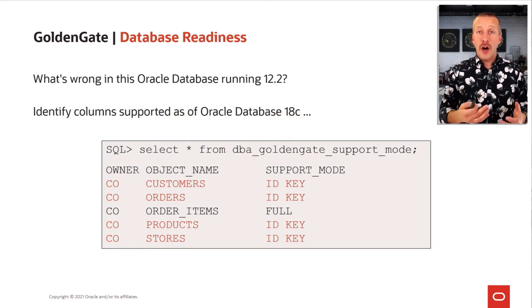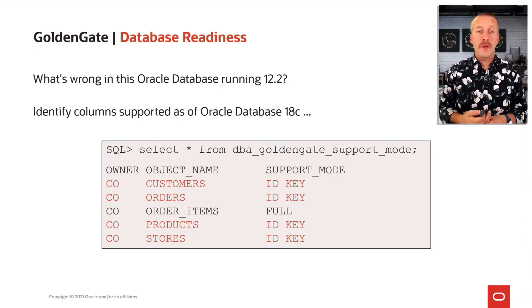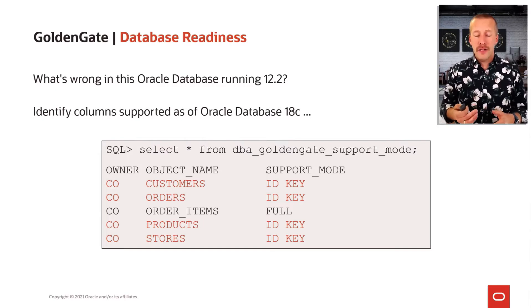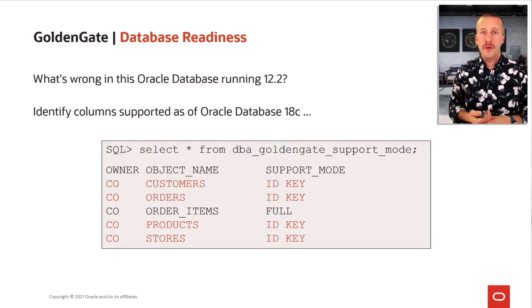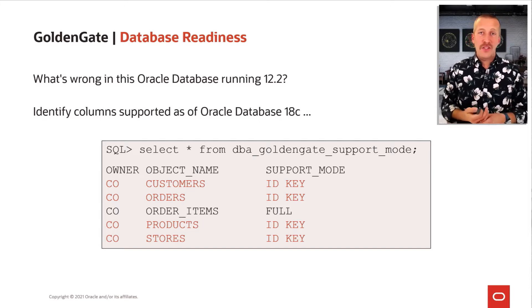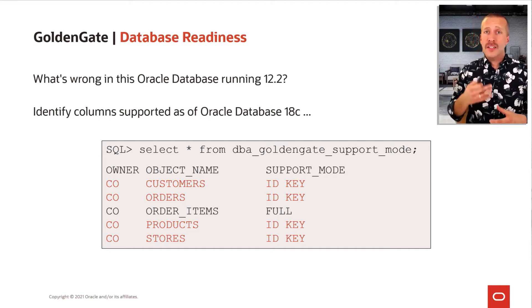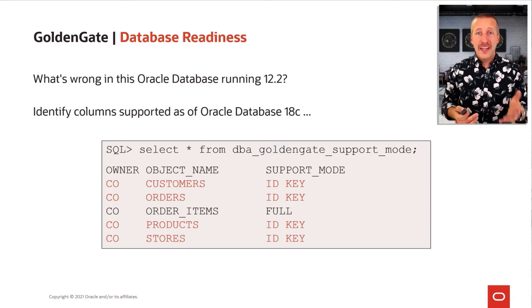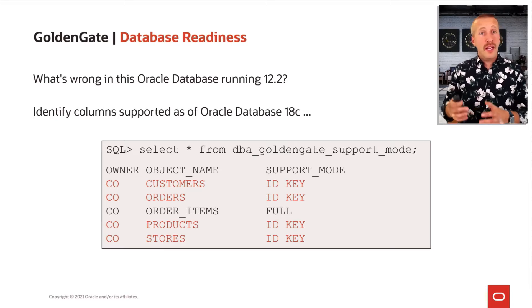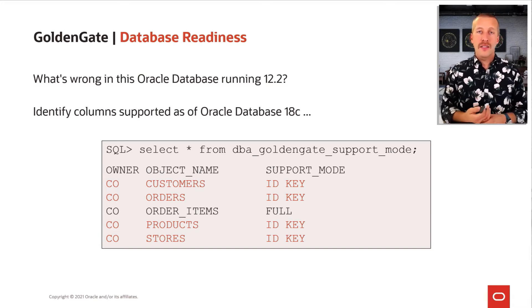So what were the problems with the objects in this database? It is a 12.2 database, and we can see that four of the objects have Support Mode set to IDKey. How can you find out what the actual problem is? There is no easy answer in 12.2 — you would need to look in the documentation, find the restrictions and limitations of Golden Gate, and compare that with the object itself. In this case, the problem was identity columns. Because the database is 12.2, they are not supported by Golden Gate yet. Only when the database reaches 18c are identity columns fully supported. But you need to do some digging.